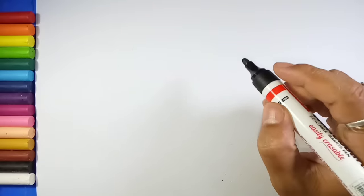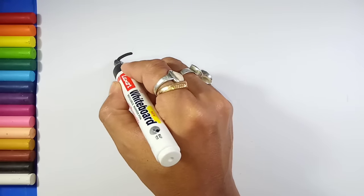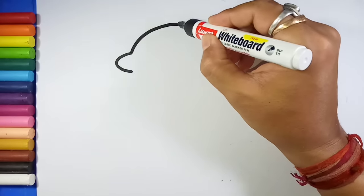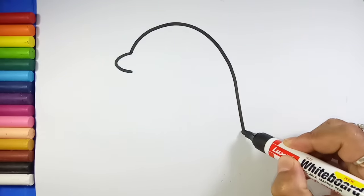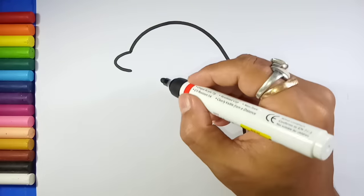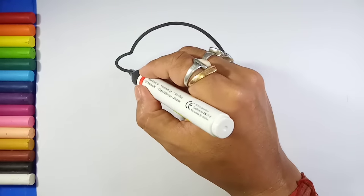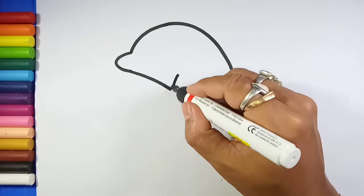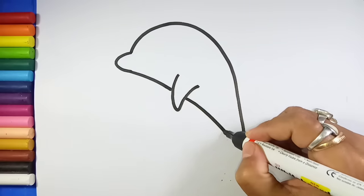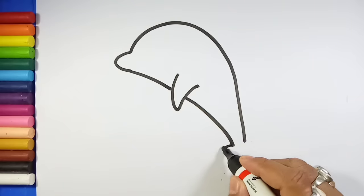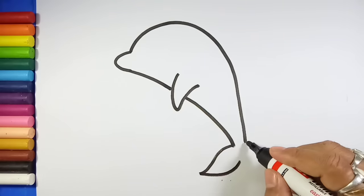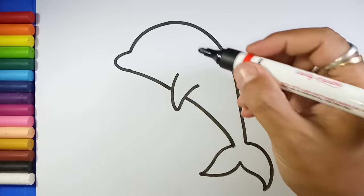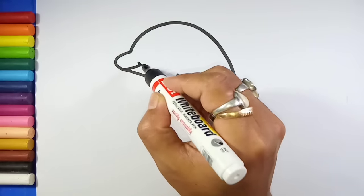First we will start from the mouth of the dolphin like this. From here leave a space and draw another line like this, this way. From here you draw the tail like this to make the dolphin smiling.